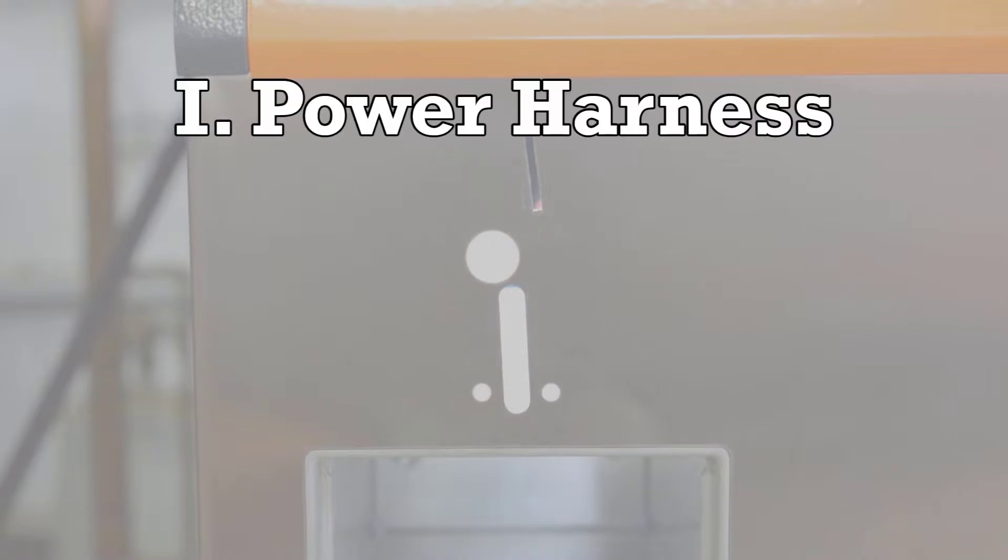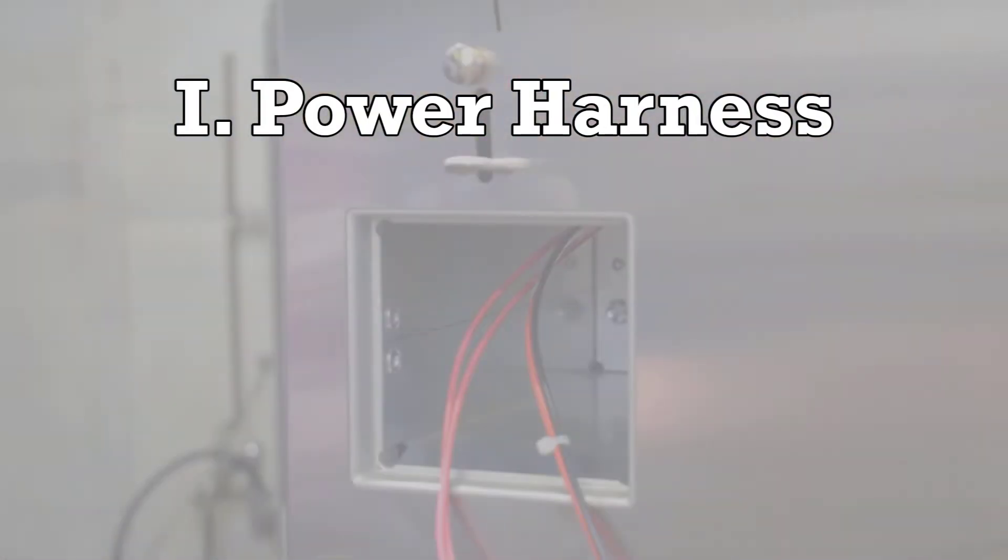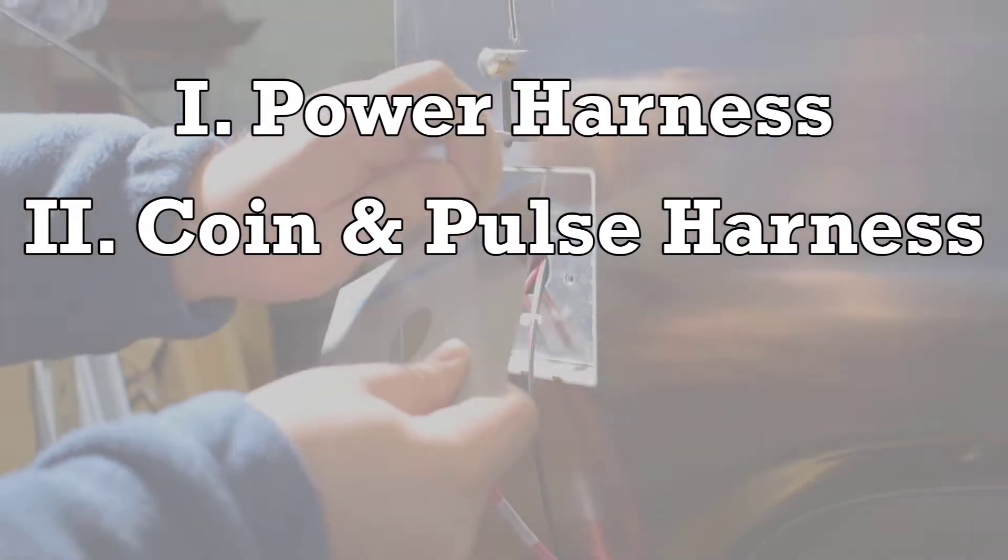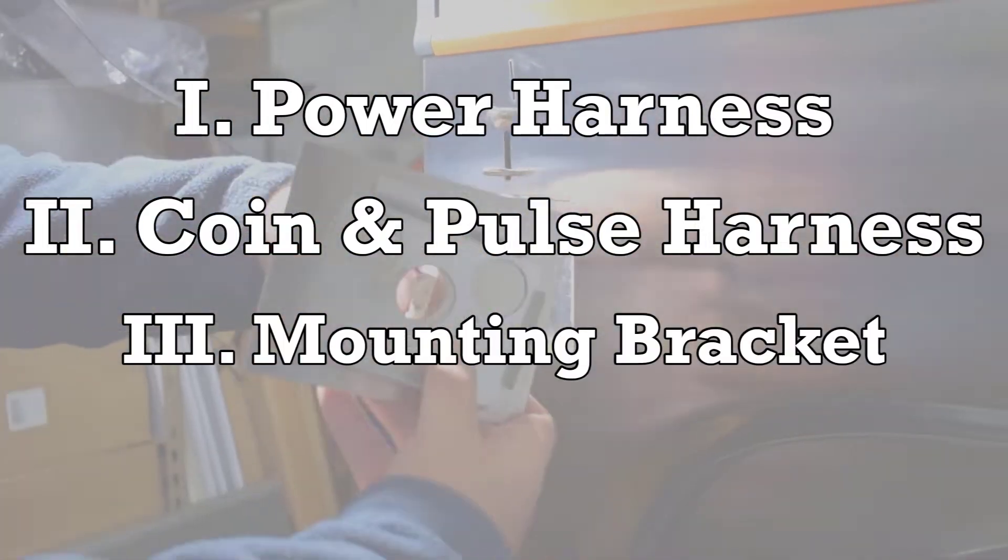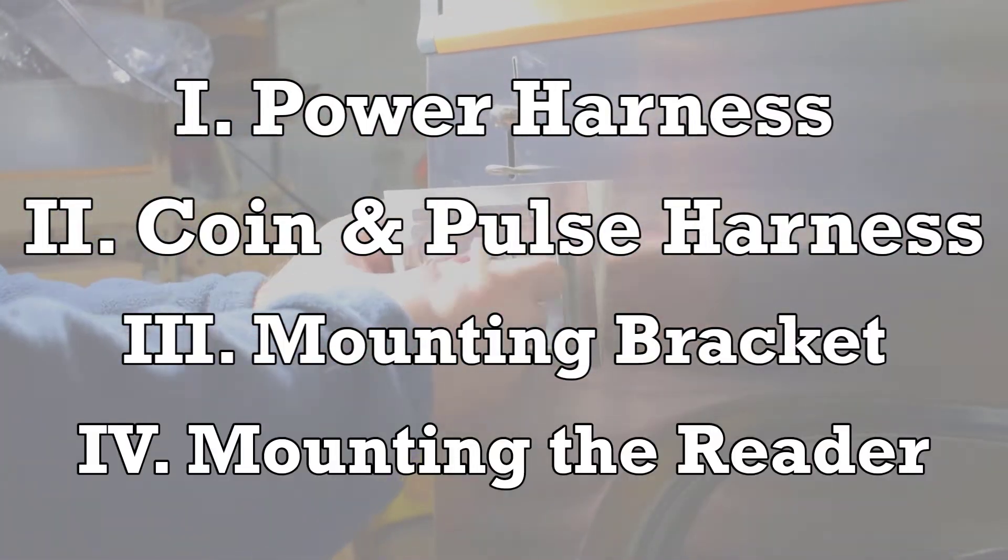This instructional guide will cover installing power harness wiring to the machine's power supply, attaching the coin sense and machine start harnesses, attaching the required mounting bracket, and connecting and mounting the reader.